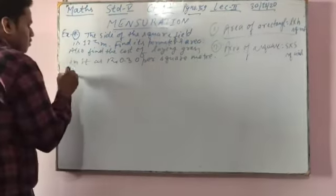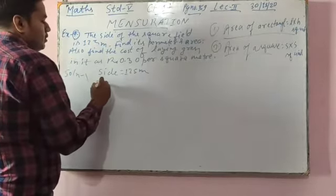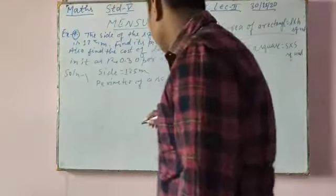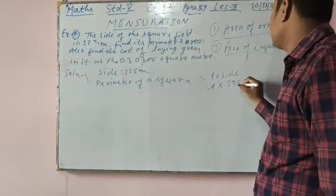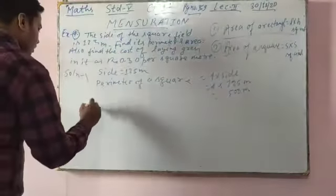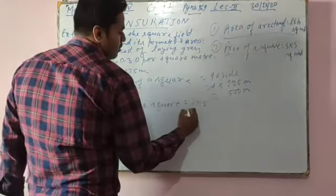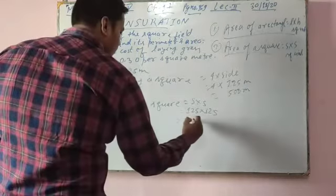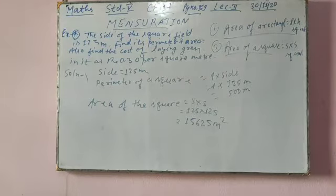Come to solution. First you have to find perimeter and area. Side is given as 125 meters. Perimeter of a square is 4 into side, so 4 into 125 gives 500 meters. Now for area of the square, side into side is 125 into 125.